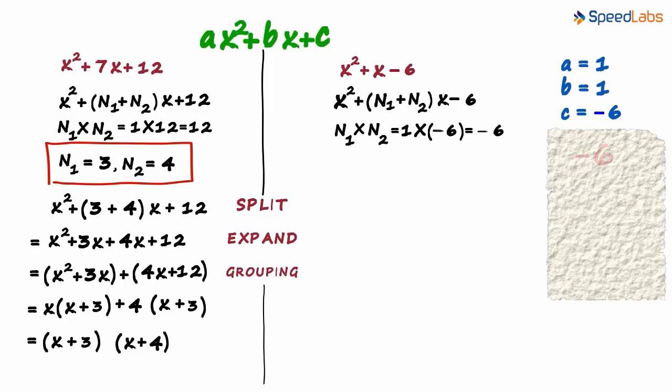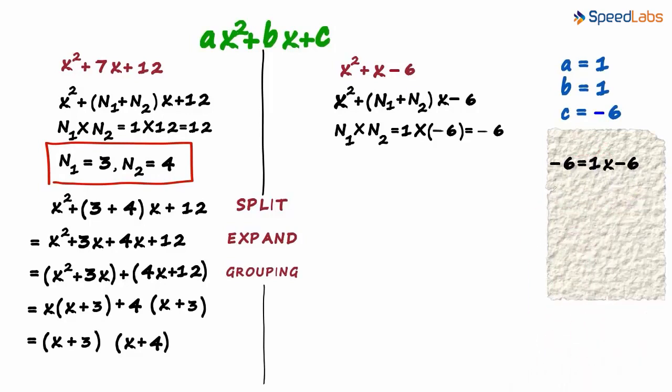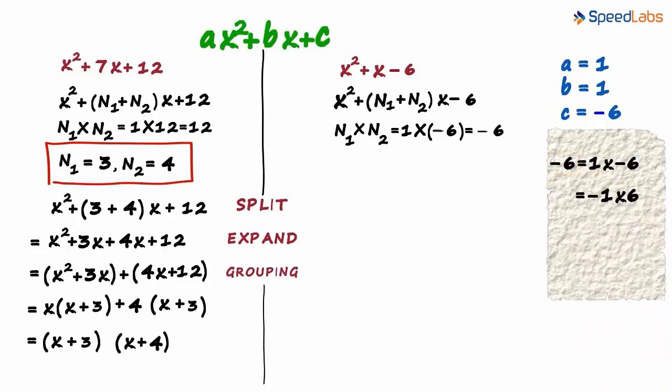Now it gets really interesting. Minus 6 can be written as 1 multiplied by minus 6. Remember, we want the sum as 1. But the sum of these two numbers is minus 5. Hence, these two numbers are not n1 and n2. Minus 6 can also be written as minus 1 multiplied by 6. The sum of these two numbers is also not 1.